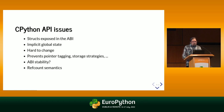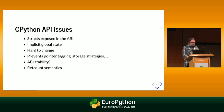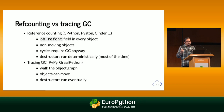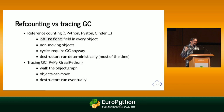Let me explain the issues with reference counting specifically by contrasting it with the approach used by PyPy, and also GraalPython, which is to have a tracing garbage collector. With reference counting, every single object keeps track of the number of references to it that exist. You know that when the ref count goes to zero, you can delete the object.